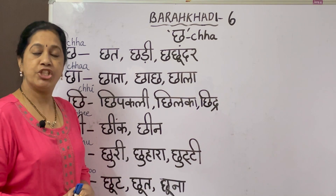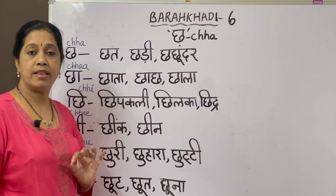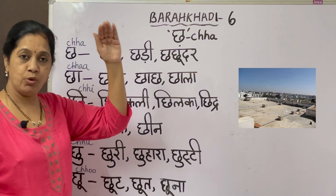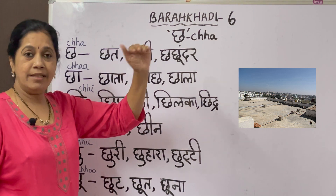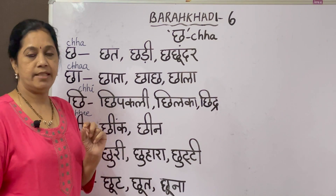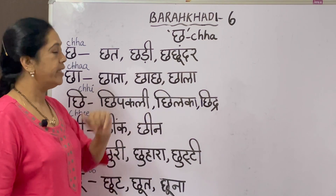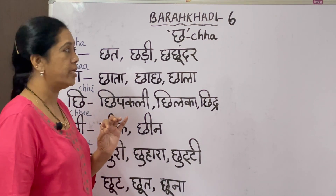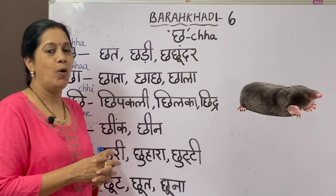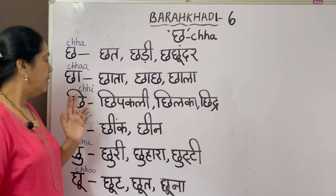The first letter is 'cha.' I have given you some words here. The first one is 'chhat' - chhat means rooftop, terrace, or ceiling. The next one, 'chhat' means a stick, like a walking stick. The next one, 'chhat chhundar' - chhat chhundar means mole, M-O-L-E, an animal - not the mole on your skin, it is an animal.